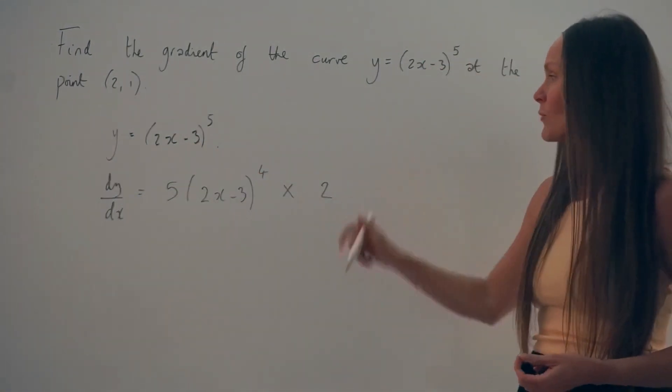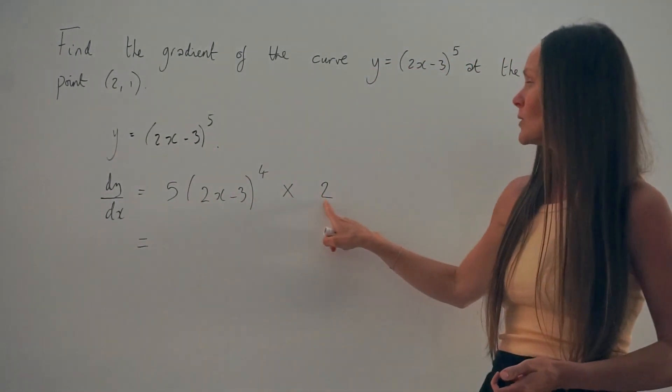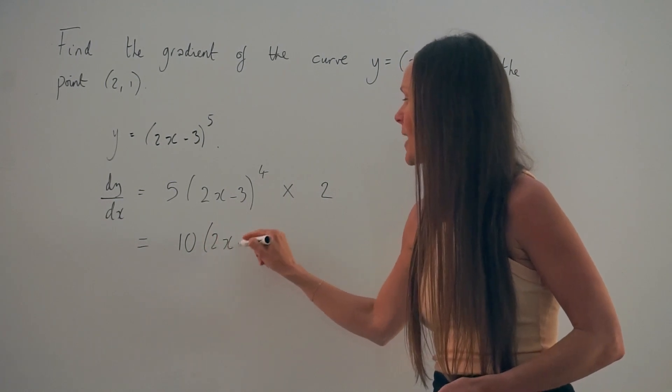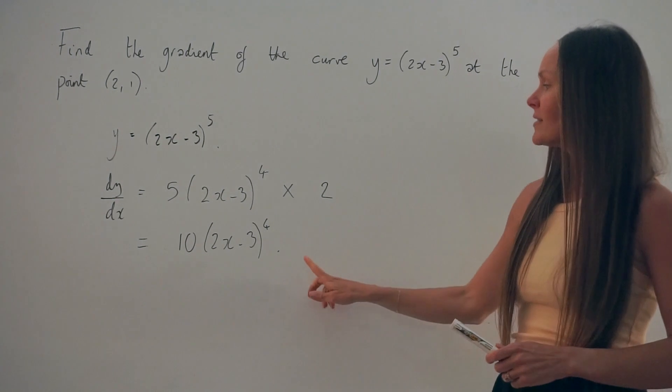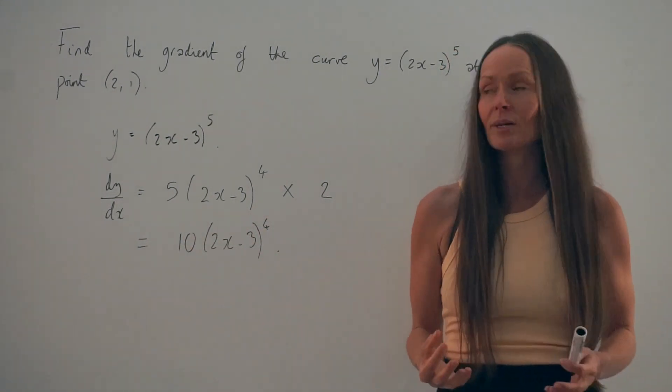So now I need to simplify this. I can do that by multiplying 5 with 2 to get 10, and the brackets and the power stay as they are. So this is the derivative, this is an expression for the gradient of the curve at any point.